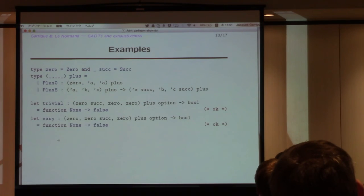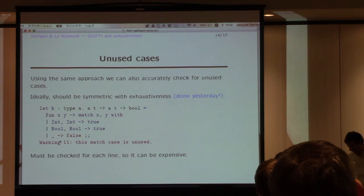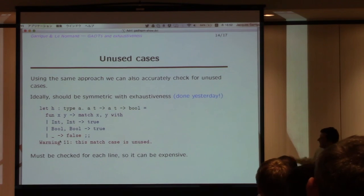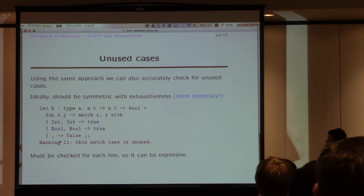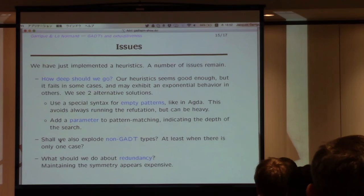So this is, this was for exhaustiveness. You have the dual of exhaustiveness, which is detection of unused cases. Actually, it took me a while to do this, and I only did that yesterday. Because it took me a long time to find the functions which was to be modified, because, well, Luc Maranget did a great work on pattern matching checks, but the algorithms are getting more and more complex. So I found it actually by looking at the oldest version of OCaml, where the code was much simpler.